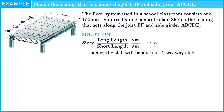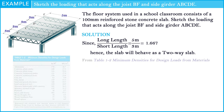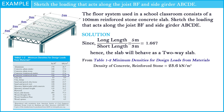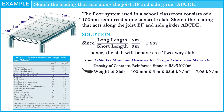The second step, we need to find the loads acting on the slab. The slab is used in a classroom with 100 mm thickness. Looking at table 1.2, minimum densities for design loads from materials, the density of reinforced stone concrete is equal to 23.6 kN per cubic meter. So the weight of the 100 mm slab is equal to 7.08 kN per meter.